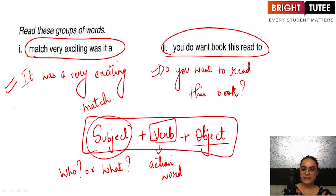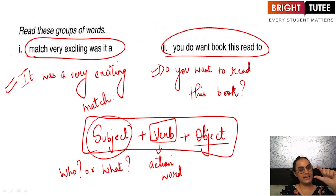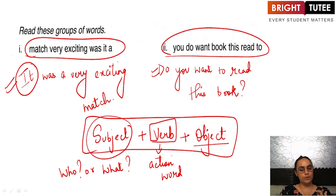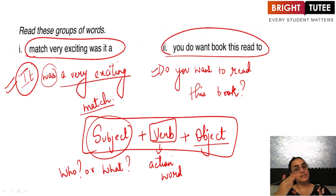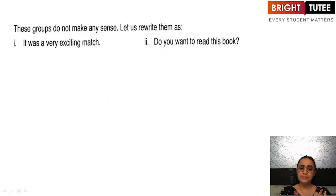For example, if we look at the sentence we rearranged: 'It was a very exciting match.' What is my subject? What am I talking about? I am talking about an exciting match, and the pronoun I have used for it is 'it.' So the first position is taken up by the pronoun for the subject — 'it' — followed by the verb 'was,' and then comes the rest of the sentence. This is how it becomes easier to identify whether a group of words is a proper sentence. So we have: 'It was a very exciting match' and 'Do you want to read this book?'